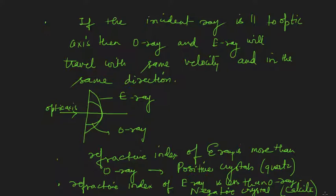Now we will try to construct another very important optical element using these known crystals so that we can polarize light. By double refraction we are getting two rays — O-ray and E-ray — with different polarizations: O-ray perpendicular to the principal plane, E-ray parallel. To completely polarize light we need only one ray, so in the next lecture we will see how to construct a new crystal where we obtain only one ray and get completely polarized light.